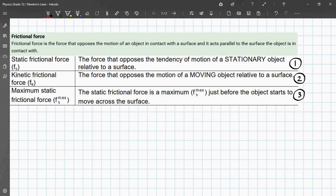There are three different types of frictional forces that you need to know the definition for. That's the static frictional force, the kinetic frictional force, and the maximum static frictional force. Let's read the definitions, and then I'll draw some diagrams to help you understand easier. So, static frictional force is the force that opposes the tendency of motion of a stationary object relative to a surface.